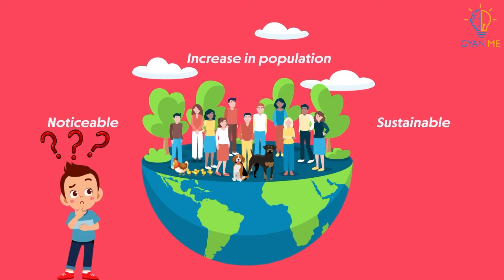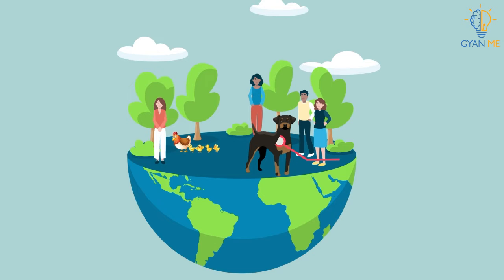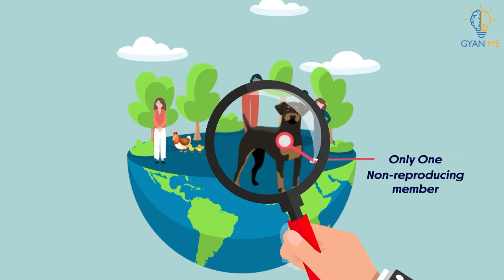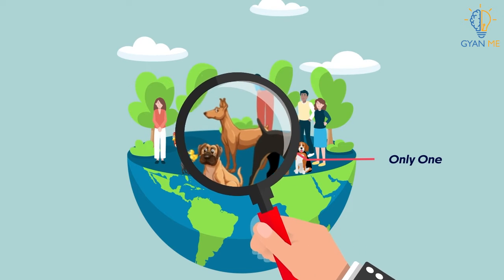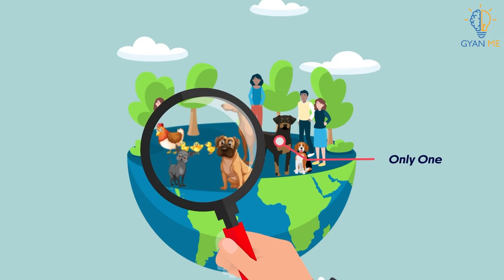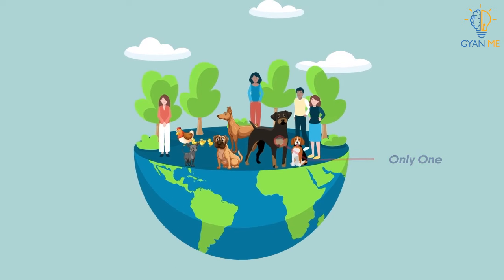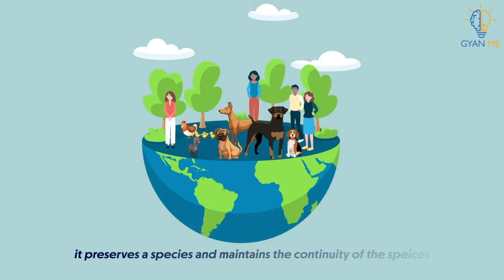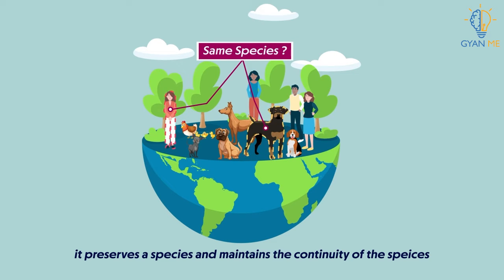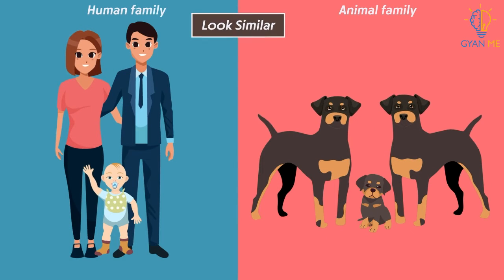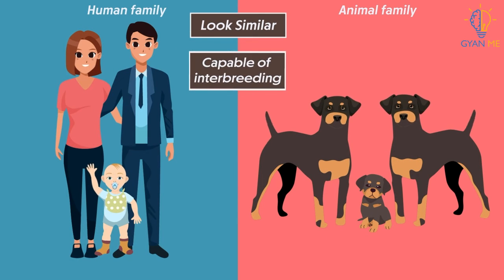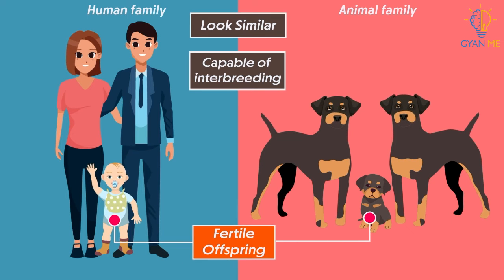Reproduction is also the means of increasing the population of a given species and in turn makes them more noticeable and sustainable. Think that if there were to be only one non-reproducing member of a particular species, it is doubtful that we would have noticed its existence. It is the large numbers of organisms belonging to that species that bring them to our notice. Even though reproduction is not an essential individual life process, it preserves a species and maintains the continuity of that species. Usually, if organisms look similar to each other and are capable of breeding and producing fertile offspring, they are of the same species.